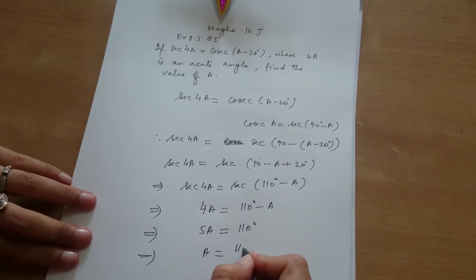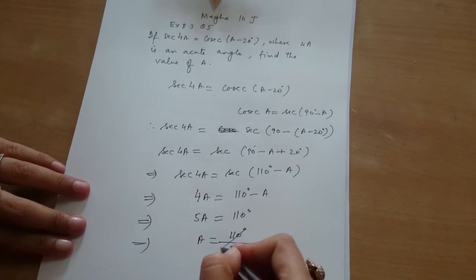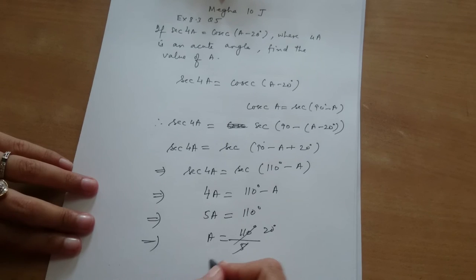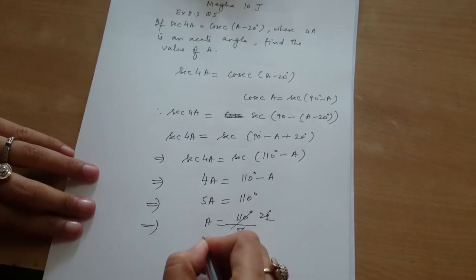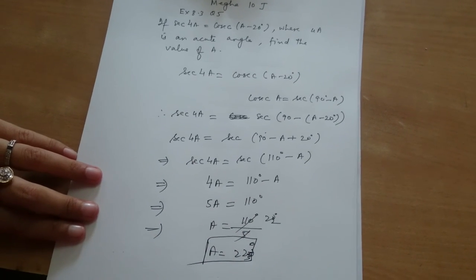This implies a equals 110 divided by 5—22 degrees. 22 degrees. So a is 22 degrees. This is the answer. Good job.